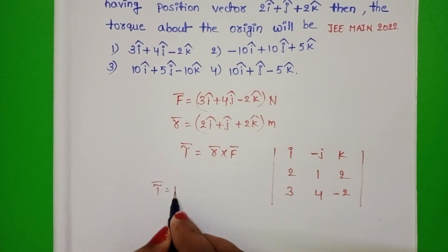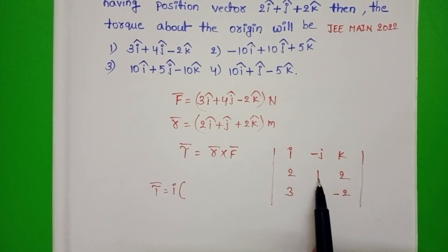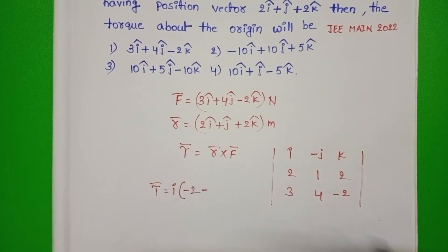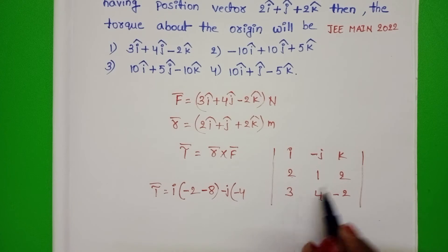Torque is equals to I into 1 into minus 2 minus 2, and in formula minus is there. 4 twos are 8, minus J into 2 into minus 2 minus 4, 3, 2s are 6, minus 6.